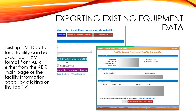One of the new features of the XML functionality within the AEIR application is the ability for facilities to export the data that NMED currently has for them. This data will be exported as an XML file and will meet the format expected as part of the AEIR XML schema. This data can be exported from AEIR in one of two ways: either from the main page of the AEIR application itself, or from within the facility information page, which you can find by clicking on the link to a particular facility on the AEIR homepage.